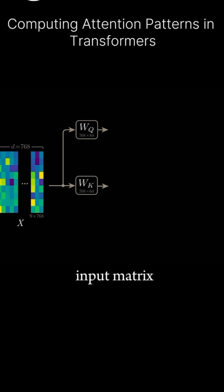To compute a given attention pattern, we multiply our input matrix X by two separate sets of learned weights, WQ and WK.